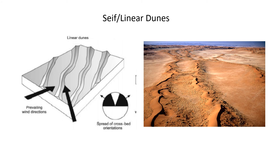Seif dunes, also called linear dunes, are elongated, almost straight sand ridges. The long axis is oriented parallel to the prevailing wind direction, and the sand ridges are continuous and serrated. These dunes occur as a series of long parallel ridges. Their formation is disputed: some say they form from strong winds blowing at a quartering angle, while others say they form from two converging winds interacting at a 90-degree angle. The cross-bedding of these dunes is characterized by lamination down both faces.